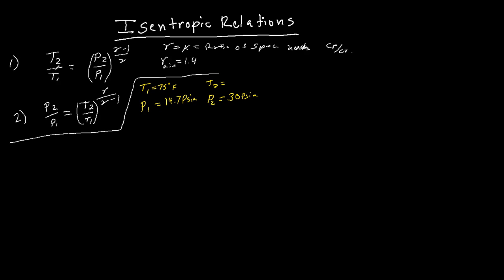Okay, so we can go ahead and use equation number 1 here. And so we're going to say that T2, we can rearrange this and move this T1 over, equals T1 times P2 over P1 to the gamma minus 1 over gamma. Okay, so now we have everything except for our final temperature, so let's solve this.